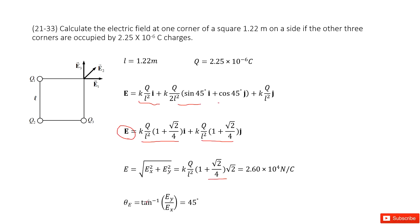We can also find the angle θ as arctan(Ey/Ex). As we know, Ex equals Ey, so that makes the angle become 45 degrees. Thank you.